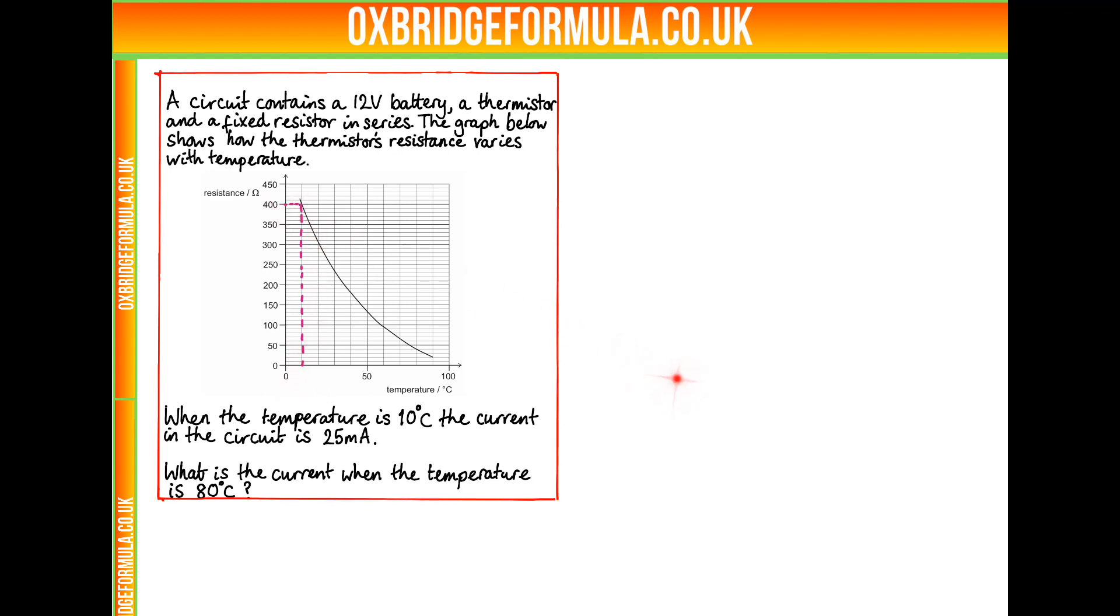So how will this be useful in calculating the current when the temperature is 80 degrees? We know for that later part we'll get the resistance of the thermistor. But as an intermediate step, we'll need to work out the resistance of the fixed resistor. Because in order to get the current, we'll just need to do 12 volts divided by total resistance.